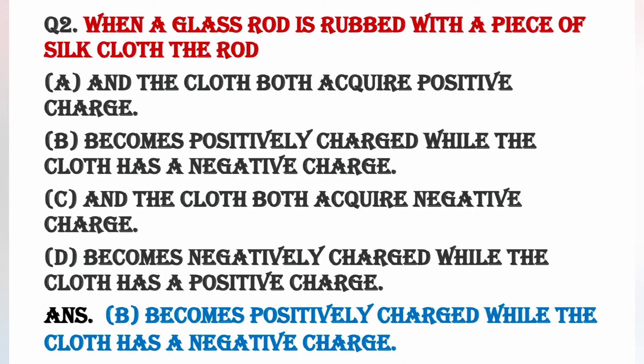Next question: When a glass rod is rubbed with a piece of silk cloth, what charges appear on them? जब हम एक glass rod को silk के साथ rub करते हैं, तो उन दोनों में कौन से charge आते हैं? The answer is B — glass rod पर positive charge आएगा और जो cloth है वो negatively charge हो जाएगी, according to the convention law.